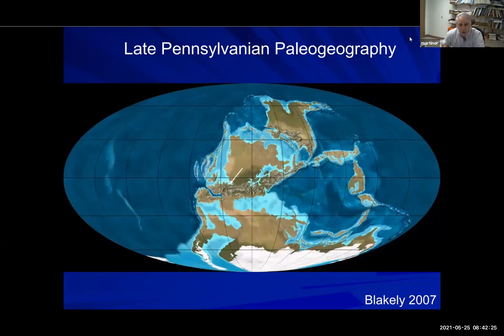This is a fairly familiar paleogeographic reconstruction — from Blakely, from about 300 million years ago, just after the very end of the Chasimovian. The white arrow points to the location of the Dunkard Basin, which is the northern part of the Appalachian Basin. During this time, we have ice sheets in Gondwana land expanding and contracting and creating a variety of eccentricity-controlled eustatic sea level changes.